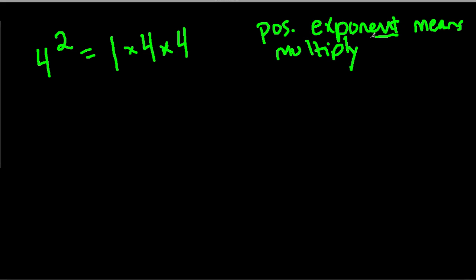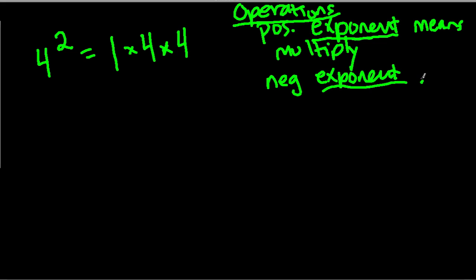Exponents are not normal numbers. That's why we have a special name for them. Exponents really represent operations. Remember, operations like multiplying and dividing. So a positive exponent is the multiplication operation. So it makes sense, then, that negative exponent, which is the opposite of positive, means to divide.